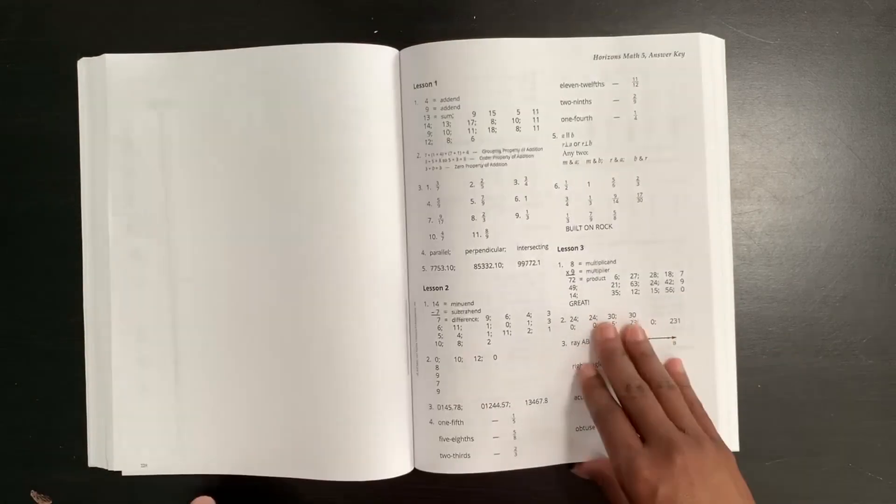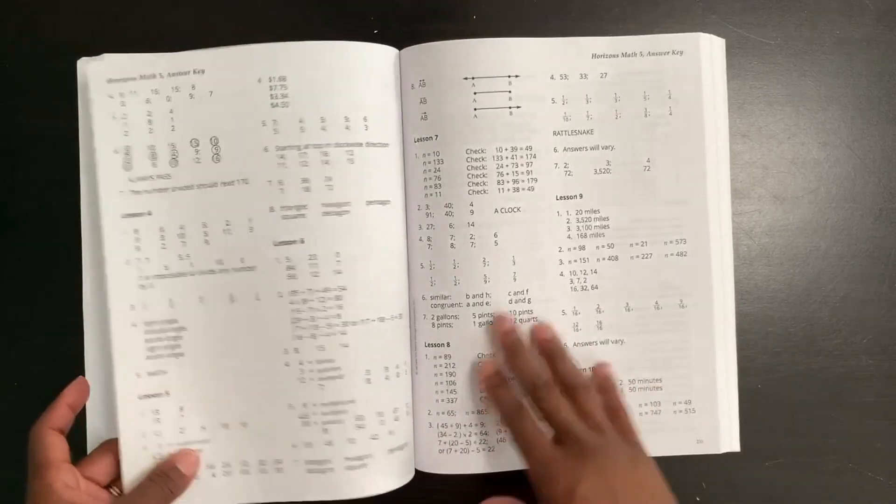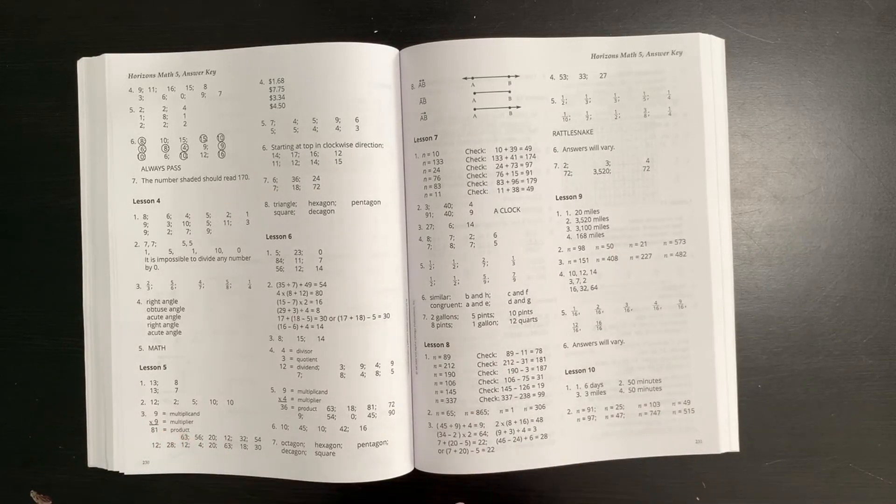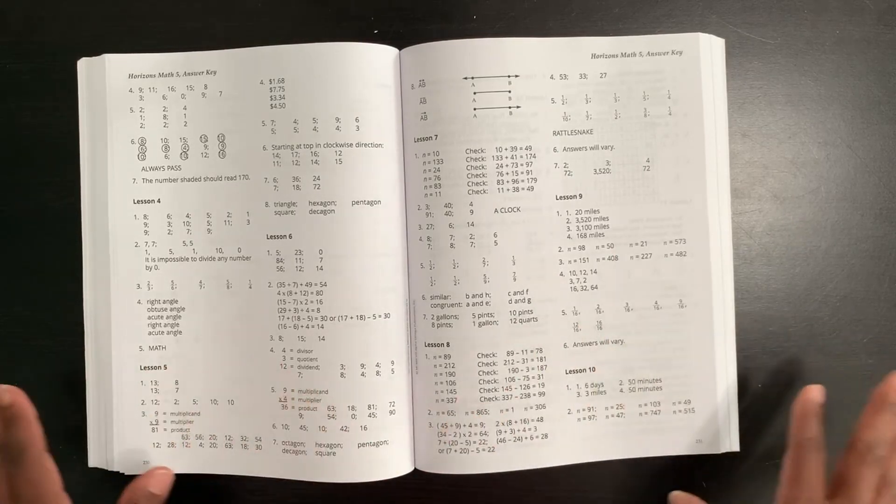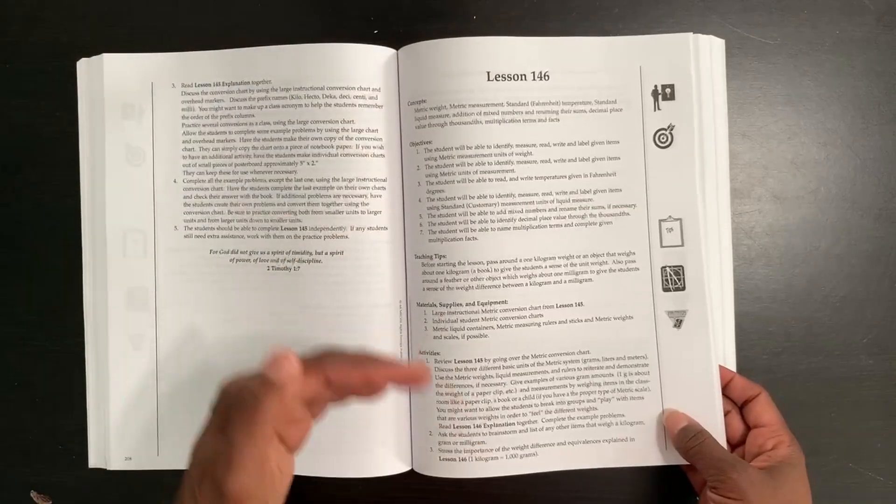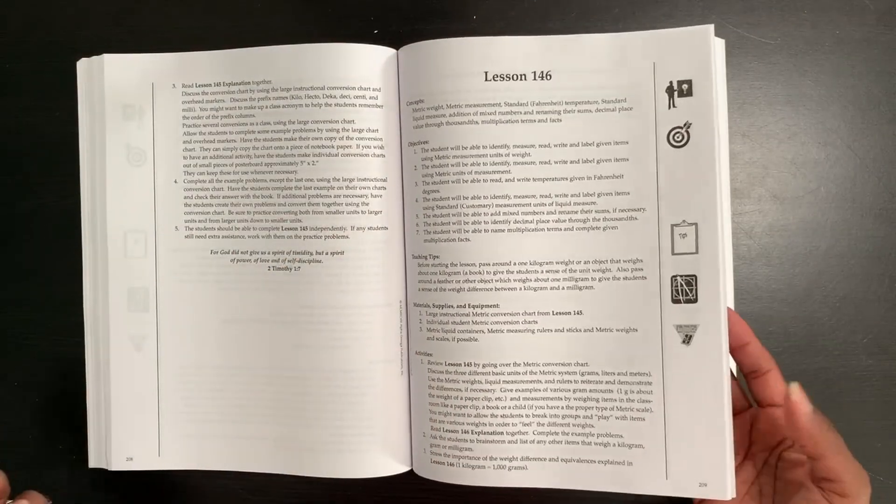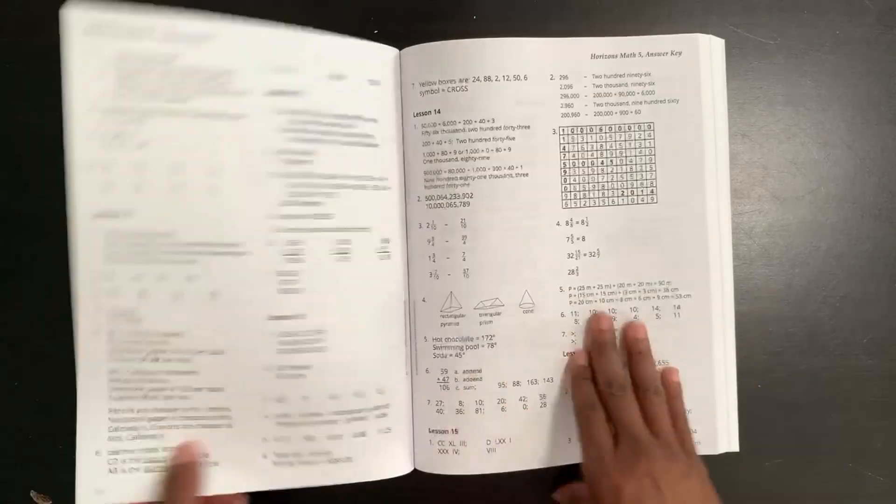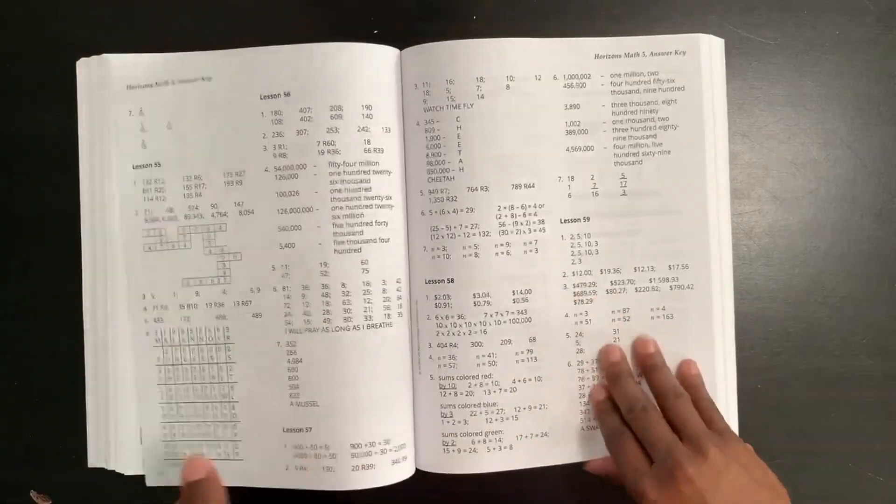Here is your answer key. All of the answers laid out. There is no explanation. Okay. So if you're looking for it explained well out, this will not give you that. But these lessons and the instruction here are very detailed and you should be able to figure that out. Okay. So let's go past the answer key.